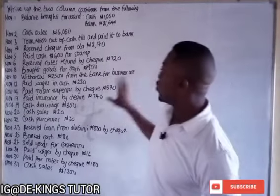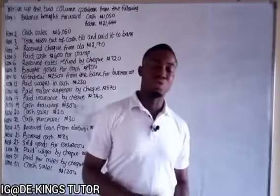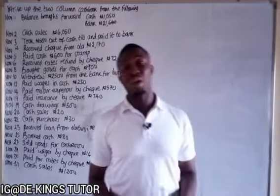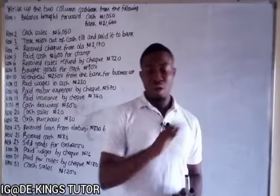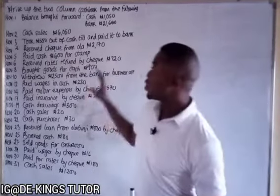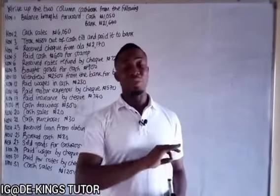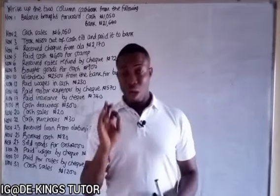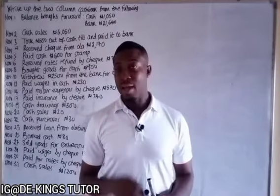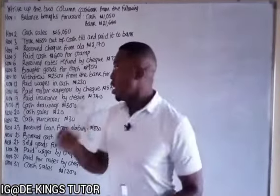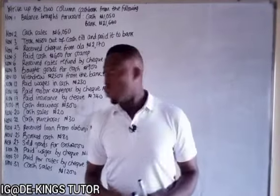I want to continue our series on the cashbook. We have seen the single column cashbook, the cashbook introduction, and solved a question relating to the cashbook. Now I want to look at another question on the two column or double column cashbook. I'll drop links to the previous videos above and in the description.